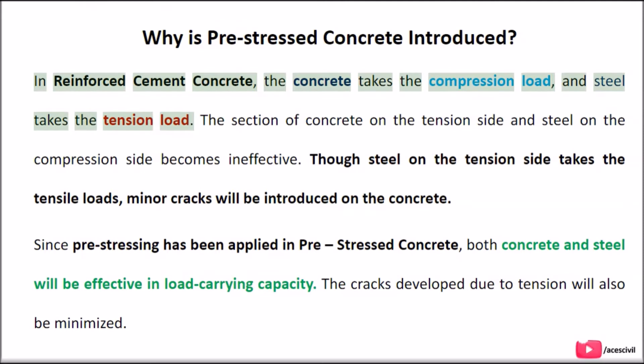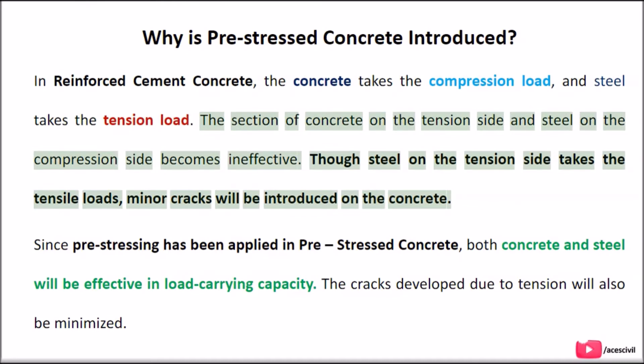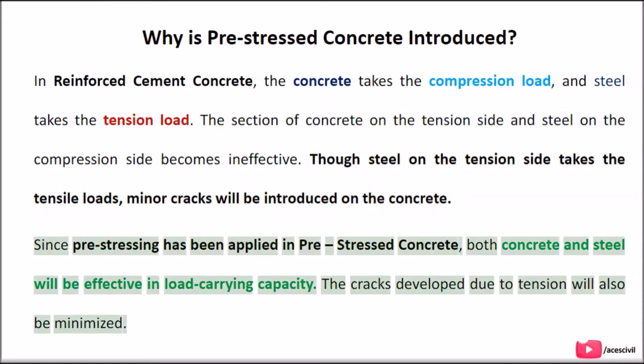Why is pre-stressed concrete introduced? In reinforced cement concrete, the concrete takes the compression load and steel takes the tension load. The section of concrete on the compression side and steel on the compression side becomes ineffective. Though steel on the tension side takes the tensile loads, minor cracks will be introduced on the concrete. Since pre-stressing has been applied in pre-stressed concrete, both concrete and steel will be effective in load-carrying capacity, and cracks developed due to tension will also be minimized.